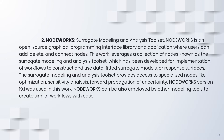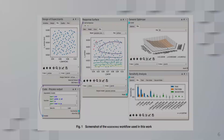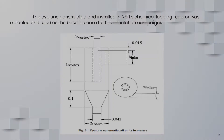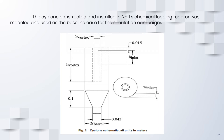Node Works version 19.1 was used in this work. The picture shows a screenshot of the Node Works workflow used in this study. The cyclone was constructed and installed in the NETL chemical looping combustor model and used as the baseline case for the simulation campaign.